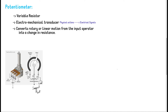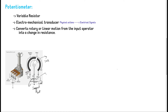The resistance changes as you rotate the potentiometer. The total resistance is 10k ohms. When the wiper is at the midpoint, you get 5k with respect to ground.